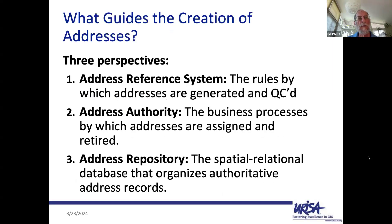What guides the creation of addresses? There are three ways to approach that question: the address reference system, which consists of the rules by which addresses are generated and quality checked; the address authority, the business process by which addresses are assigned and retired; and the address repository, the spatial relational database that organizes authoritative address records. They're all important to keep in mind, and they're part of what makes addressing — which seems so simple when you're five years old — really complicated when you get into it.